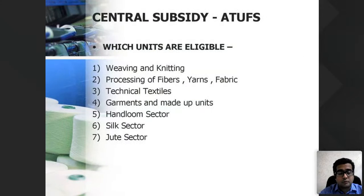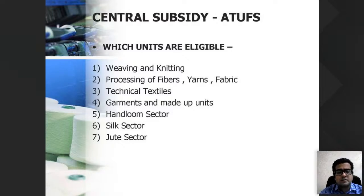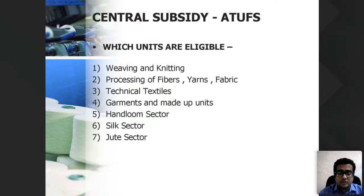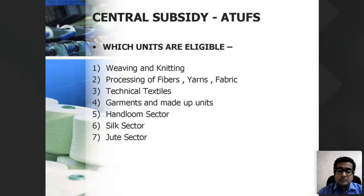Seven types of units are eligible under ATUFS: weaving and knitting, processing of fibers, technical textiles, garments and made-up, handloom, silk, and jute. One of the most important additions is technical textiles, which covers many things — like sanitary napkins, bandages, surgical cotton — anything where the raw material is textile-based but used for a different technical purpose. The government is giving a huge amount of subsidy mainly to technical textiles.